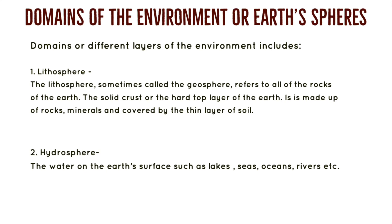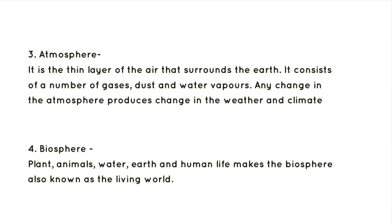The atmosphere is a thin layer of air that surrounds the earth. It consists of a number of gases, dust, and water vapors. Any changes in the atmosphere produce changes in the weather and climate at large. The upper portion of the atmosphere protects organisms in the biosphere from the sun's ultraviolet radiation, and it also absorbs and emits heat.